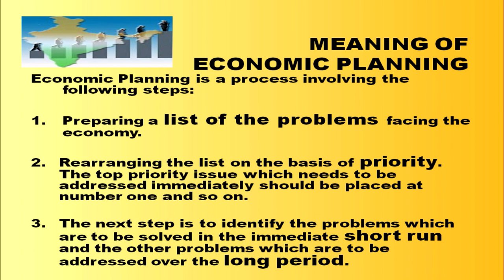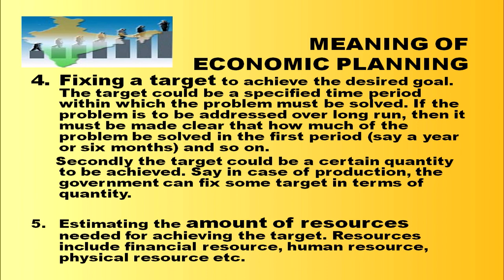Economic planning is a process involving various steps. First, preparing a list of the problems facing the economy. Second, rearranging the list on the basis of priority — the top priority issue needing immediate address is placed at number one. Third, identifying problems to be solved in the immediate short run versus those addressed over the long period. Fourth, fixing a target to achieve the desired goal, specifying the time period within which the problem must be solved.